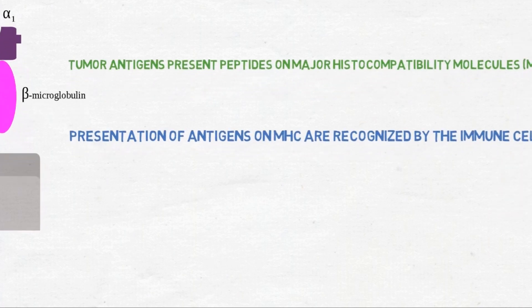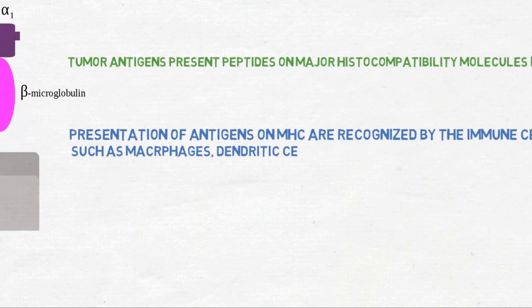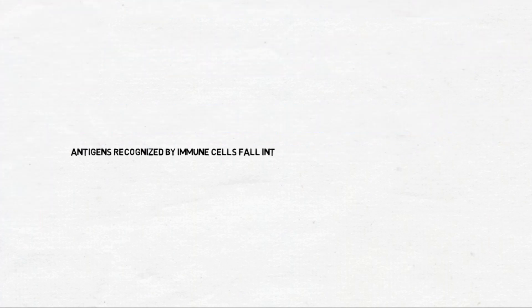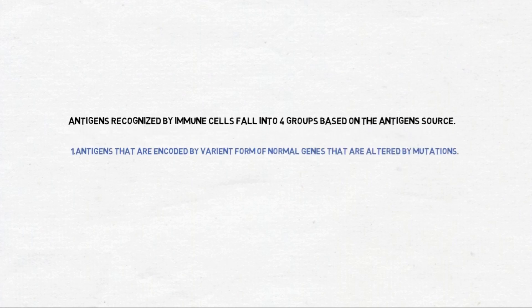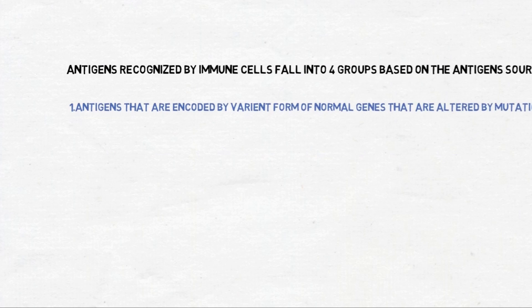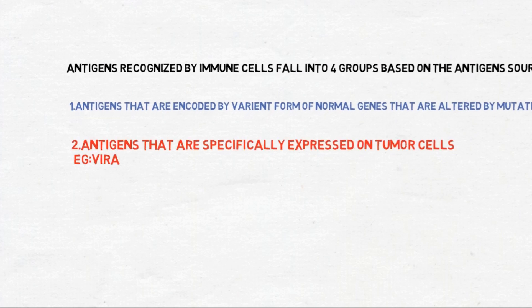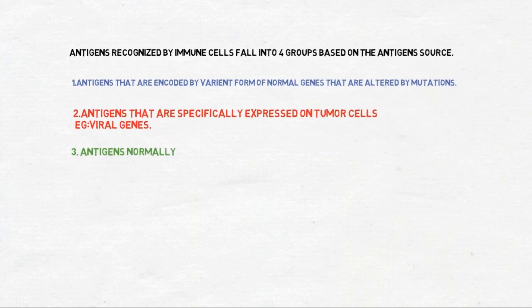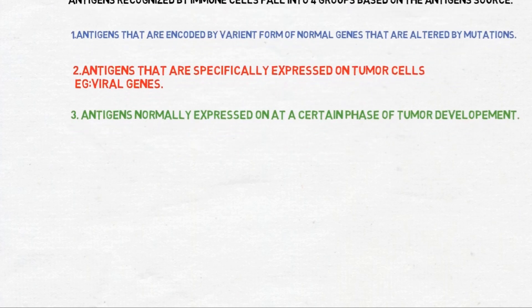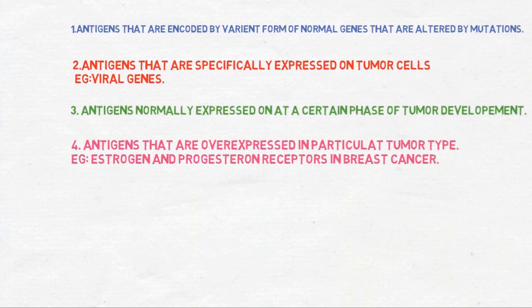The presentation of these peptides on major histocompatibility molecules leads to the activation of certain immune cells: macrophages, dendritic cells, B cells, and T cells. The antigen proteins expressed by cancer cells may include proteins whose structure may be modified due to mutations or due to viral gene incorporation. These proteins are normally expressed in small quantities. There are also certain tumor antigens expressed at a certain phase of tumor development or in a particular tumor type.